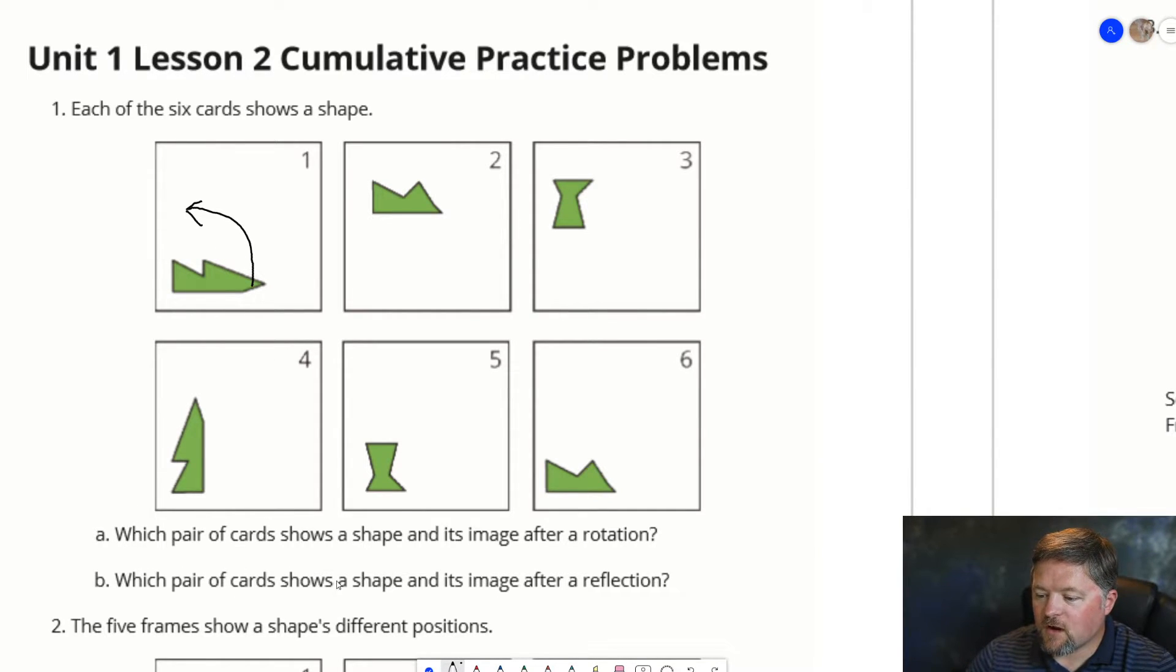Part B: Which pair of cards shows a shape and its image after a reflection? So, a reflection. We've flipped it. Which pair of images is that? Well, 2 and 6 is another pair. But those are both oriented the same way.